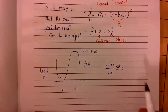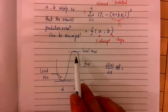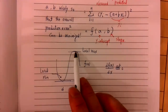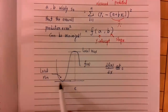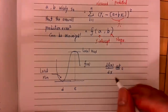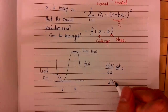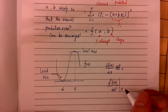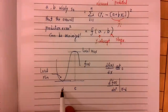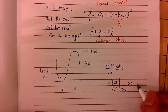Then you check the point. If the second derivative is negative, that's a maximum. If the second derivative is positive, that's a minimum. You can double check: for a given point, if the second derivative is greater than zero, that is a local minimum.